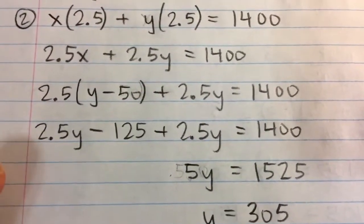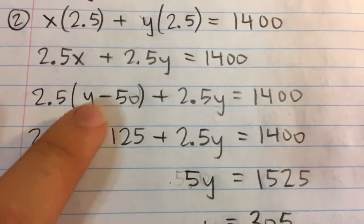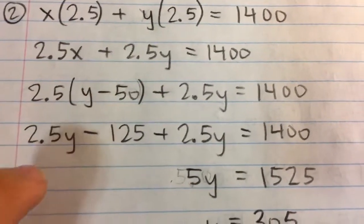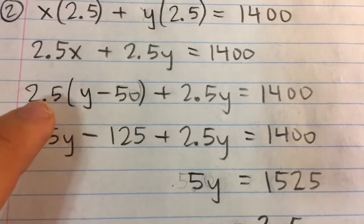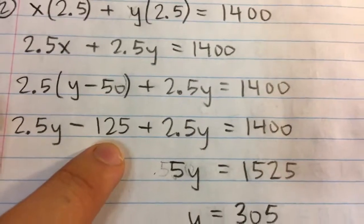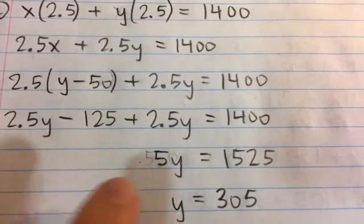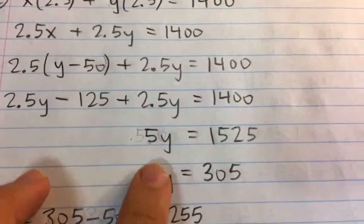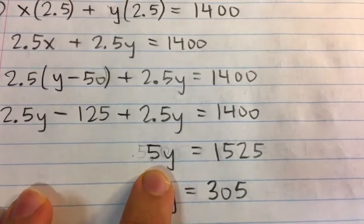So to solve this equation, we're going to first distribute the 2.5 to both terms: 2.5y minus 2.5 times 50, which is 125. Now we can collect like terms, 2.5y plus 2.5y gives us 5y.